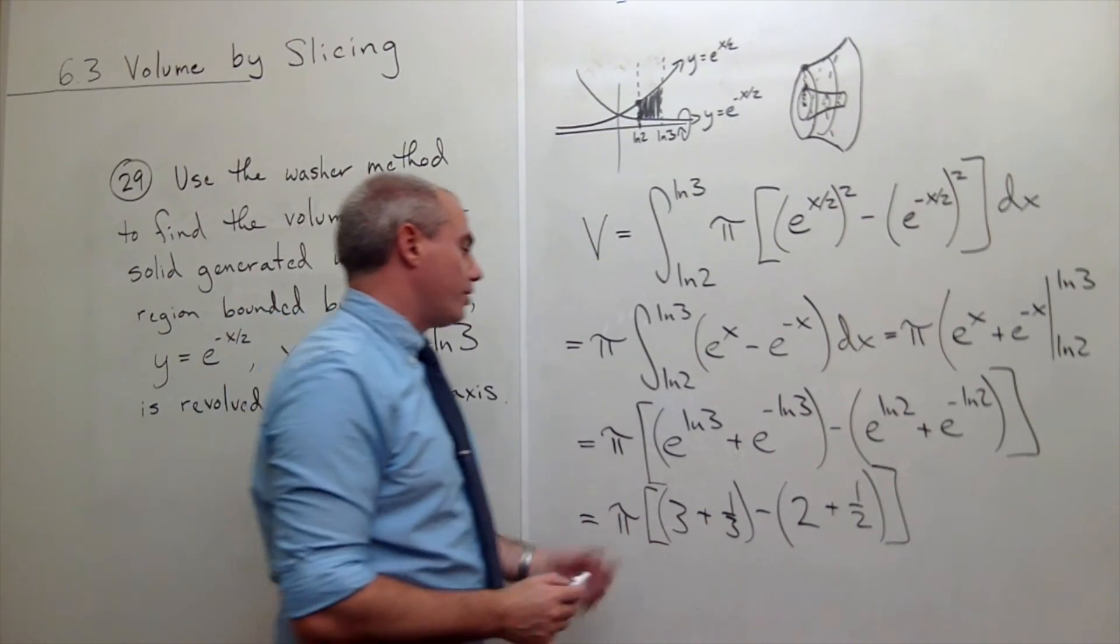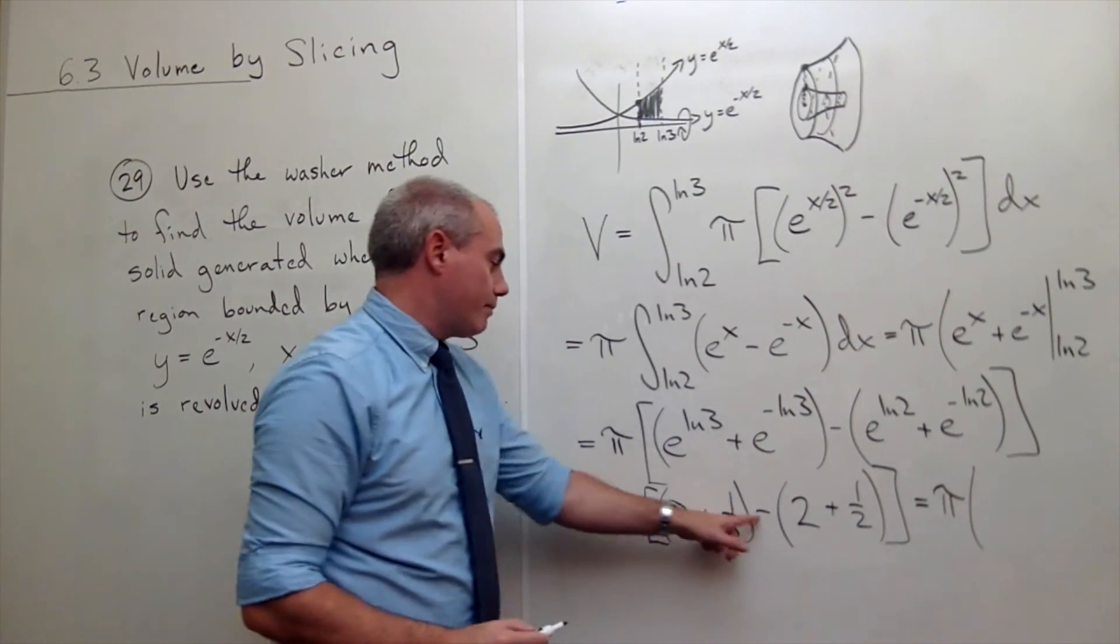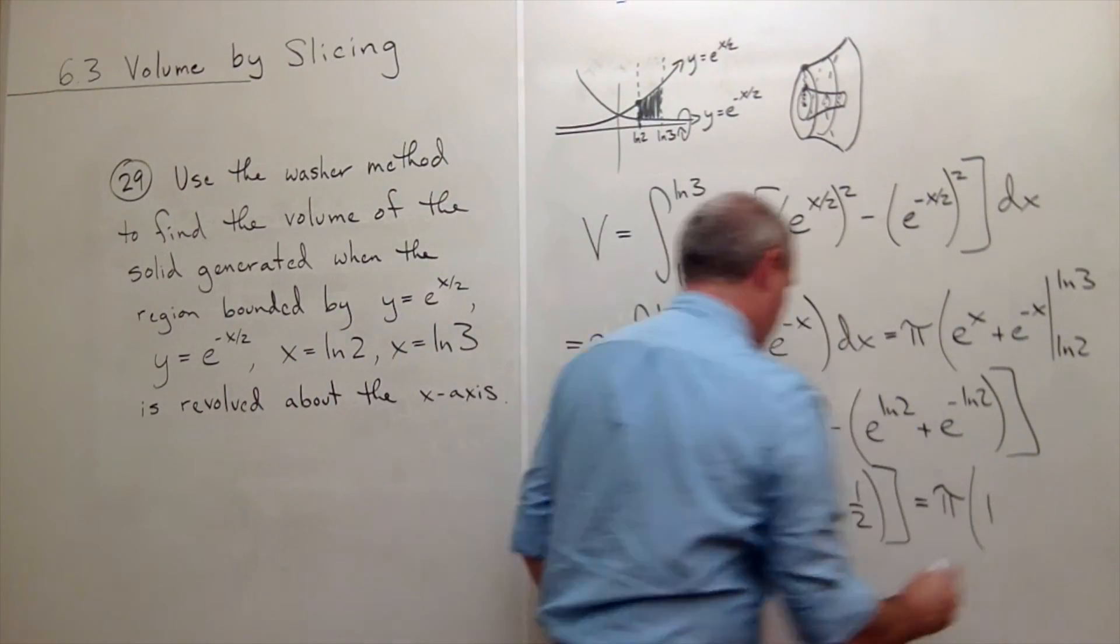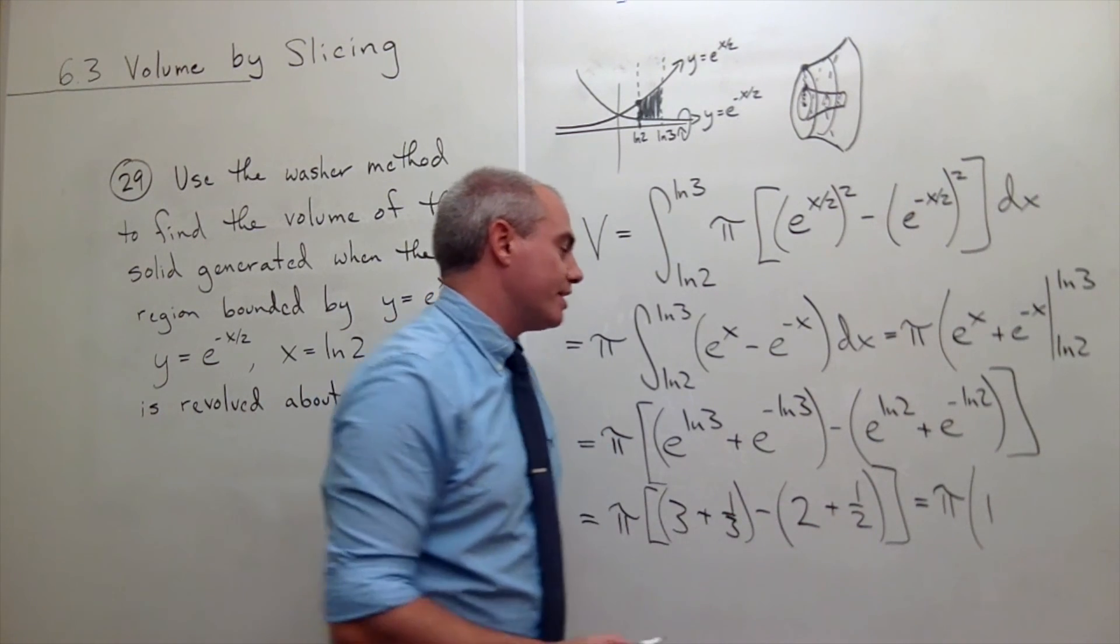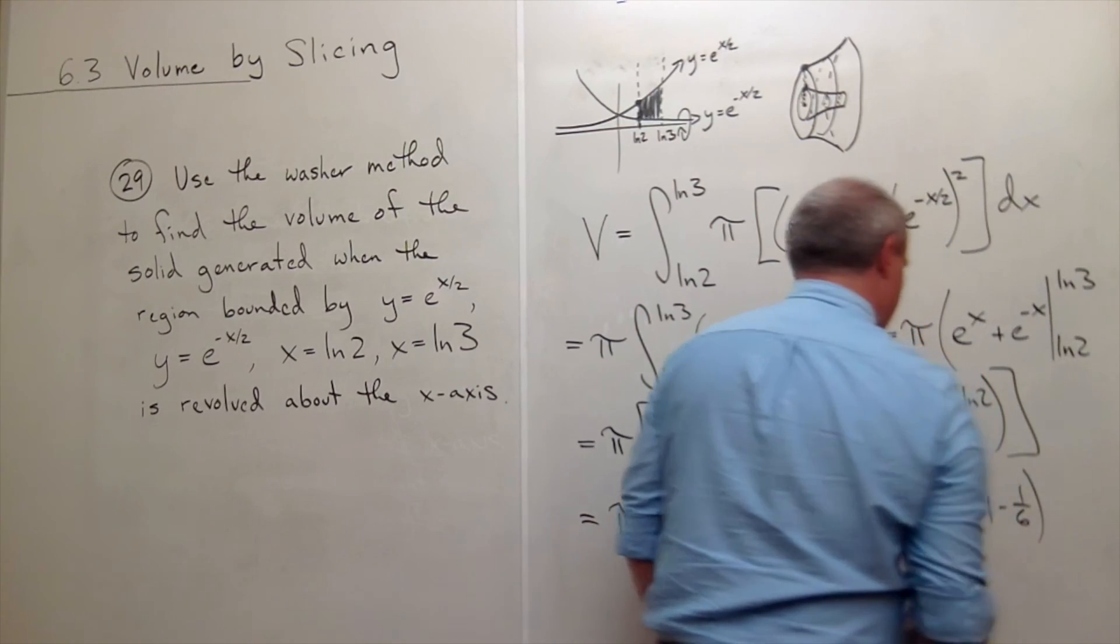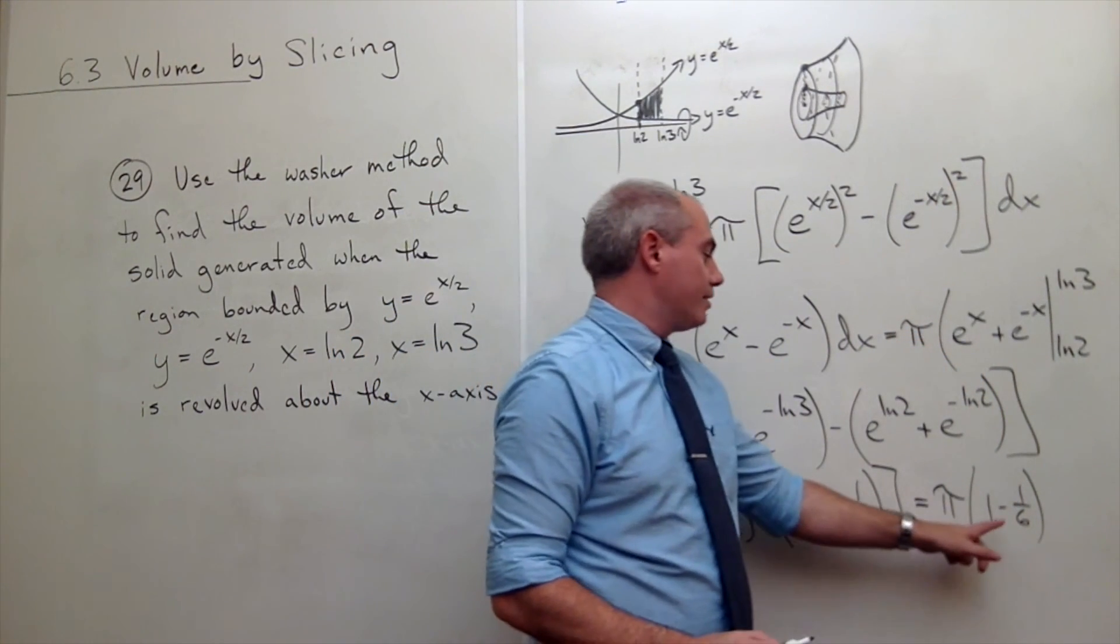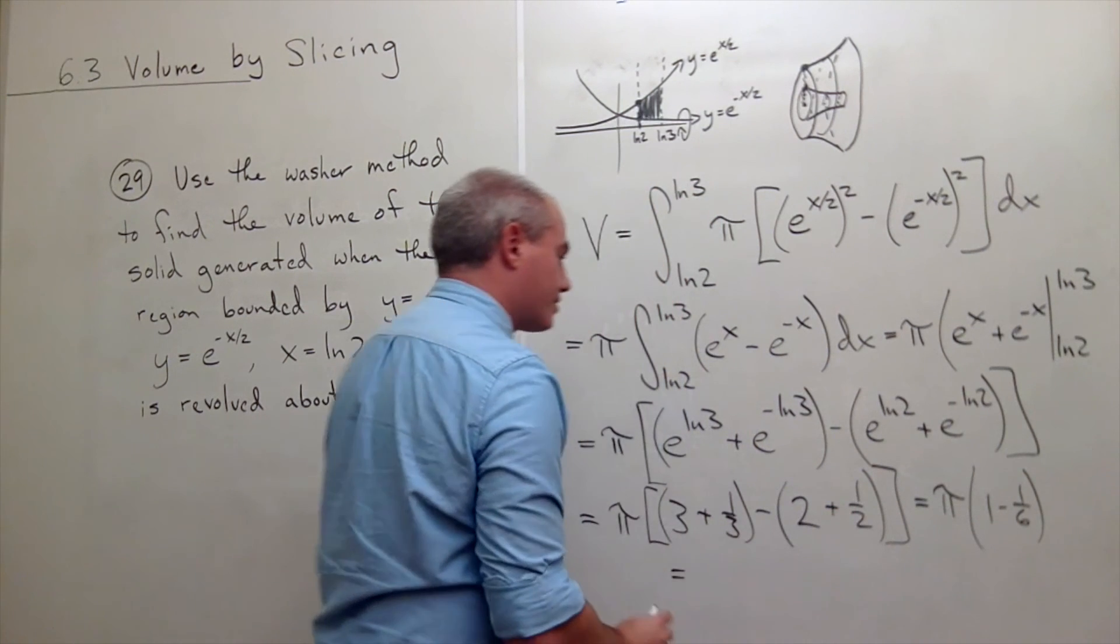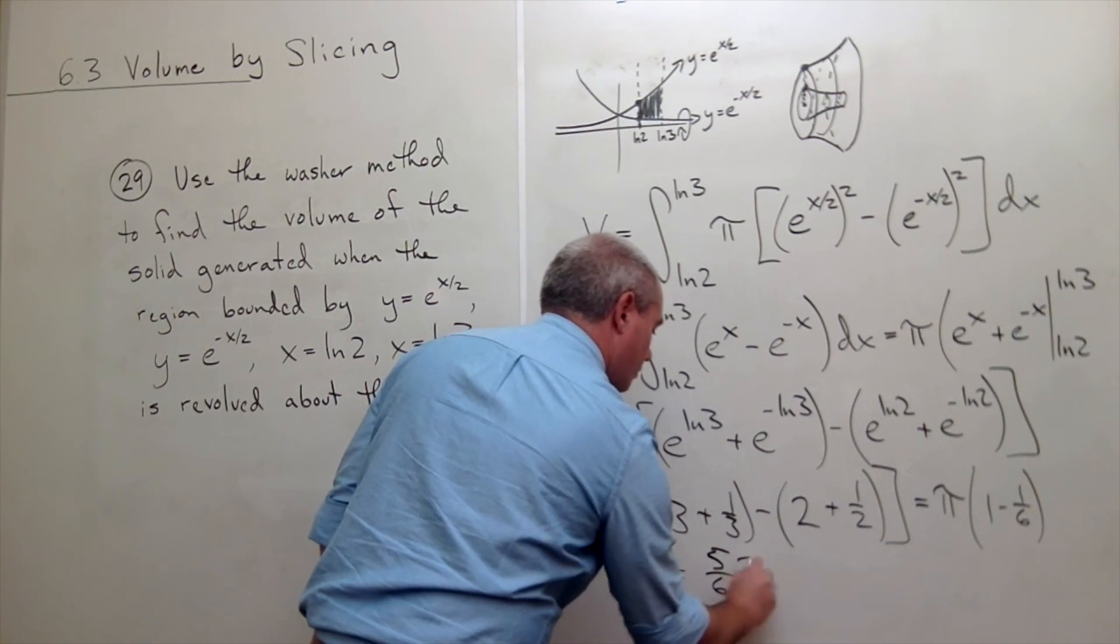Let's combine it all together. We get pi times 3 minus 2 is 1. And a third minus 1 half is negative 1 sixth. So our final answer here is pi times 5 sixth. So 5 over 6 pi.